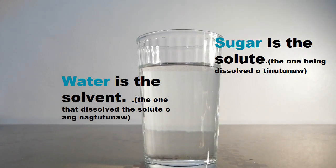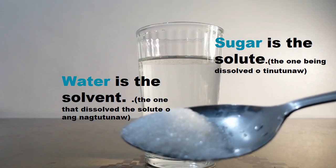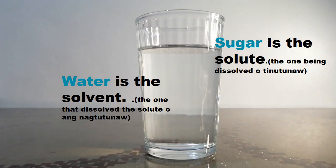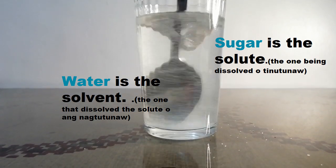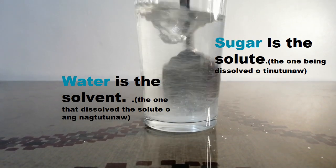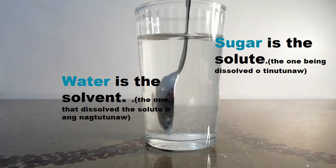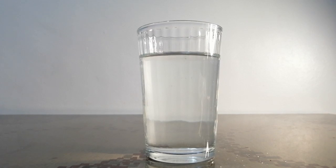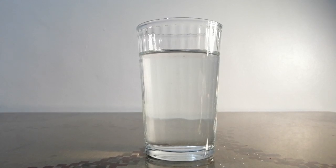Here is another example of a solution. We are going to dissolve sugar in water. So the sugar is the solute — the one being dissolved, o yung tinutunaw natin. And the water is the solvent — the one that dissolves the solute, o ang nagtutunaw sa sugar. The sugar is completely dissolved in the water. So the sugar is the solute and the water is the solvent.